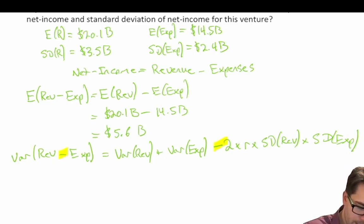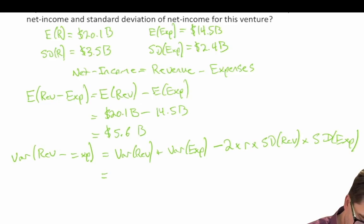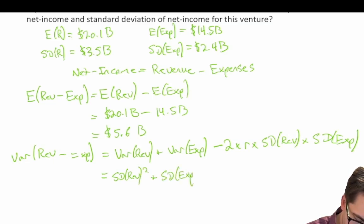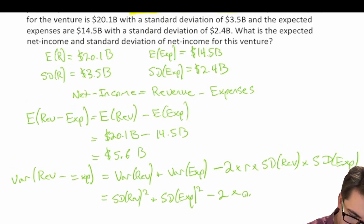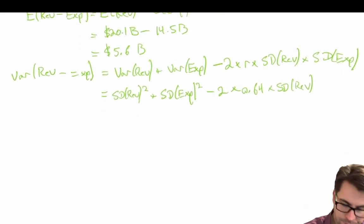Note the negative sign — we need to be aware of the sign used in our function. If it's X minus Y, the covariance term becomes minus 2. Since we don't know the variance directly but we do know the standard deviation, this becomes: standard deviation of revenue squared, plus standard deviation of expenses squared, minus 2 times 0.64 times the standard deviation of revenue times the standard deviation of expenses.